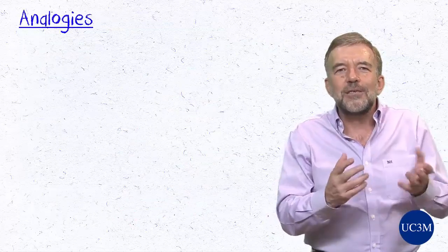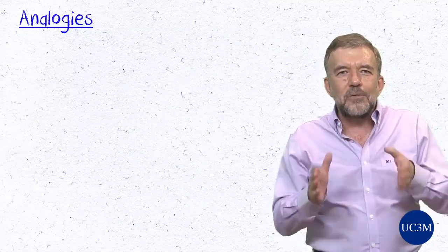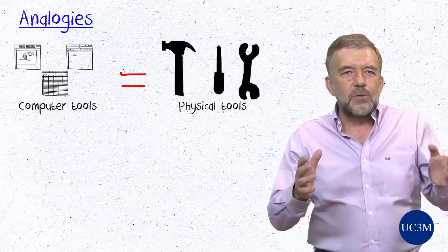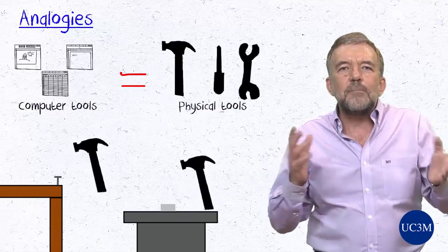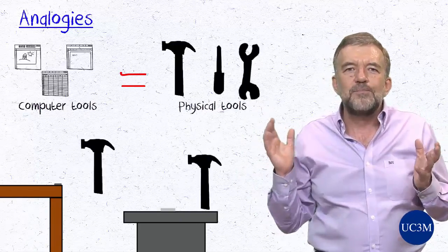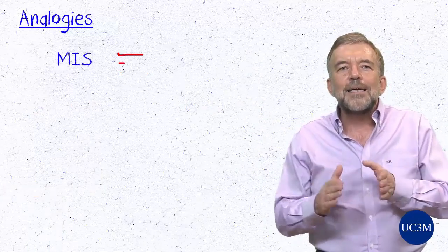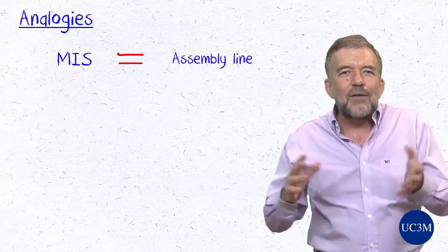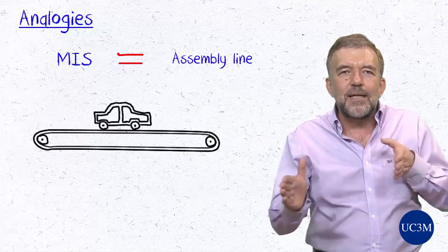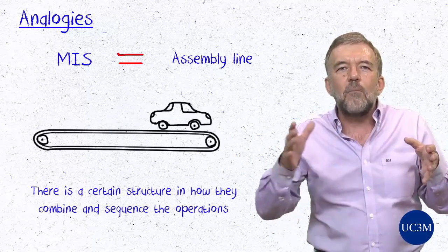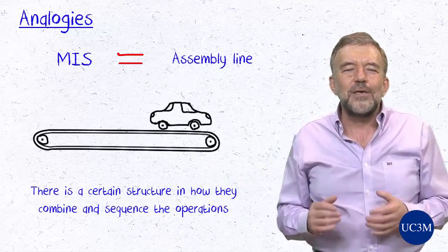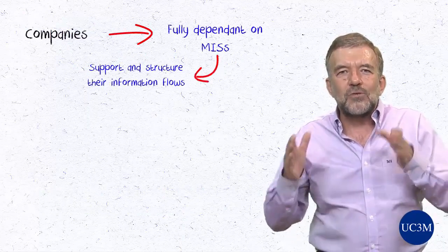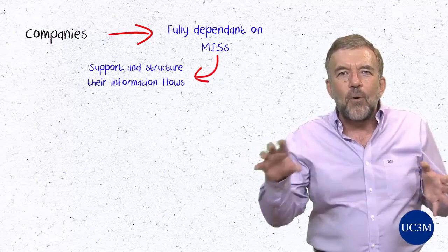An analogy could be drawn here between computer tools and physical tools such as a hammer, a screwdriver, or a wrench. They can be useful in assembling things, but they do not prescribe how they will be used or for what — that is entirely up to the user. We could then draw an analogy between a management information system and an assembly line. Assembly lines range from very rigid to highly flexible, but they do have a certain structure. They are designed to assemble certain types of products, and there is a certain structure in how they combine and sequence operations. Modern manufacturing is heavily reliant on assembly lines, and current companies are fully dependent on the management information systems that support and structure their information flows and form their backbone, or their nervous system.